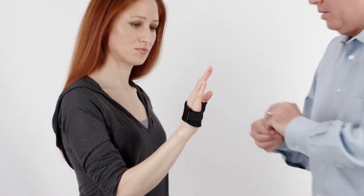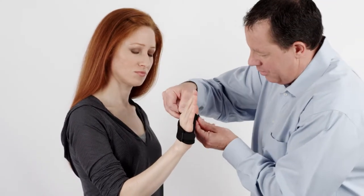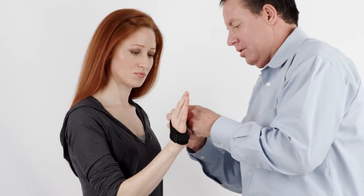Secure hook and loop tabs on the dorsal side of the brace. Secure the accessory strap in the desired position on the thumb.